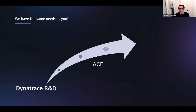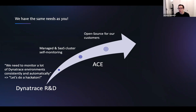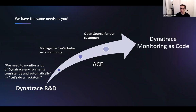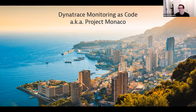We at Dynatrace are not so different from you — we have a massive amount of Dynatrace environments because we use Dynatrace to monitor Dynatrace. We need to configure them consistently, and we don't have one or two — we have tens or hundreds of these environments. So we needed a toolset that would support that, and we started using it internally. A few weeks ago, we decided to open source this for our customers, because you also want to define an easy way to apply configuration to your Dynatrace environments in a consistent and predictable way. That came about as Dynatrace monitoring as code — we also refer to it as Project Monaco, because face it, monitoring as code is not a very attractive name, but Monaco definitely is.